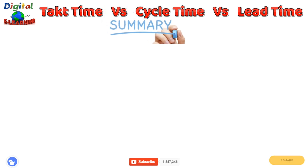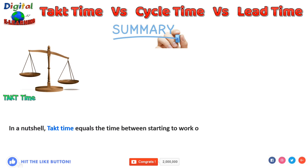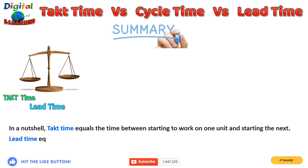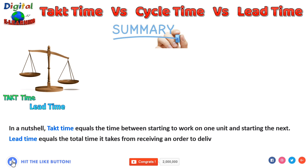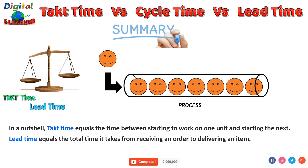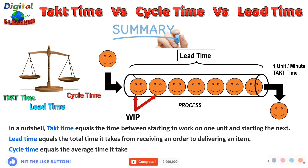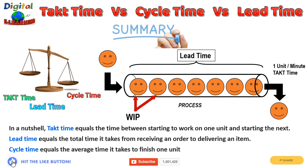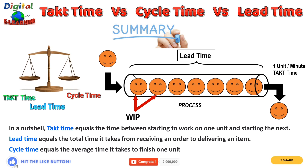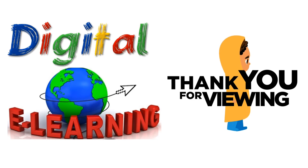Let us do a quick recap. Takt time is the time between starting to work on one unit and starting the next one. Lead time equals the total time it takes from receiving an order to delivering an item. Cycle time equals the average time it takes to finish one unit. That is the difference between takt time, cycle time, and lead time. Thanks for watching Digitally Learning — have a fantastic day ahead.